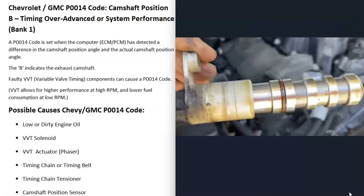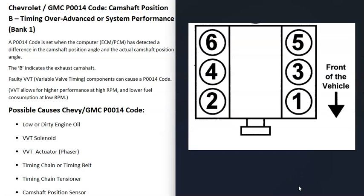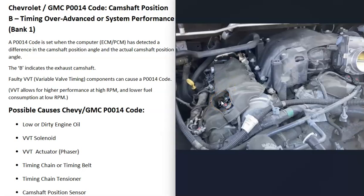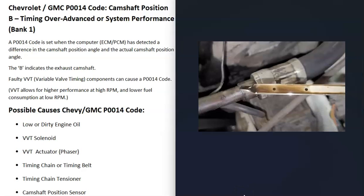When you get a P0014 code, the computer is seeing an issue inside one of these systems. The 'B' in the code points to the exhaust side of the engine. On a four-cylinder, find the exhaust side; on a V6 or V8, bank one is always the side with the number one cylinder. The camshaft position sensor on the exhaust side of bank one is the sensor reporting the issue.